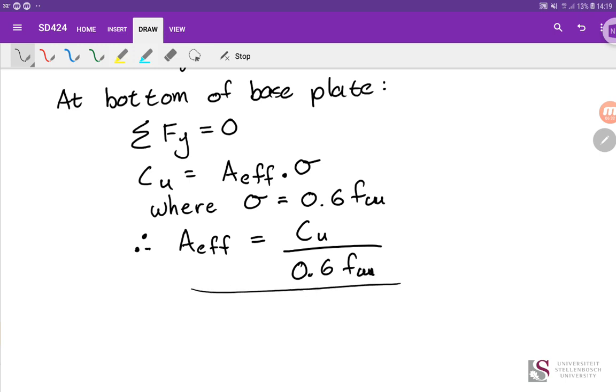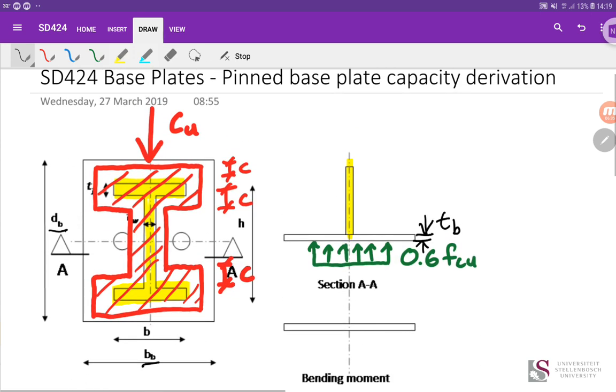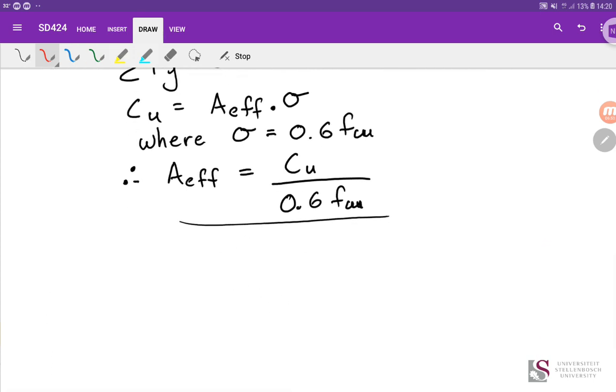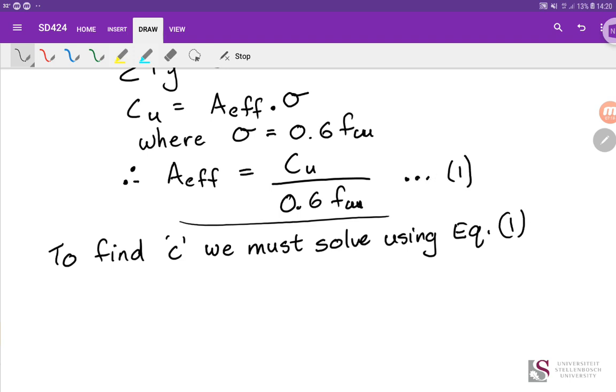Therefore, the effective area we need is Cu over 0.6 FCU. So that gives us an equation for how much area do we need. So looking at it, that red hatched area I've got shown, that is the effective area. That's our effective area, and it's just a question of how do we get that, because we need to solve for C. Once we've got that, we can continue with our equations. And so, to find C, we must solve using equation 1.